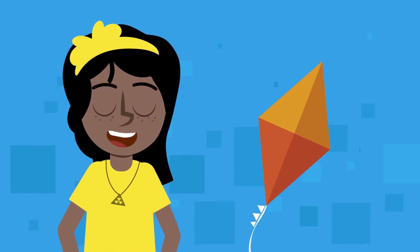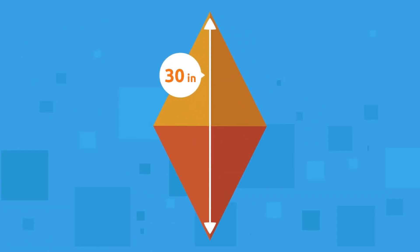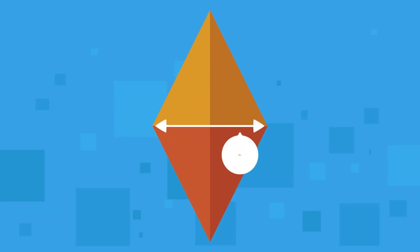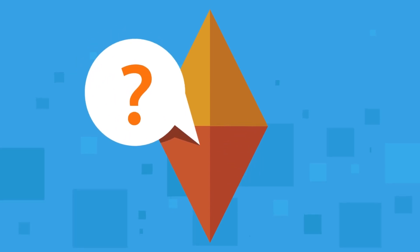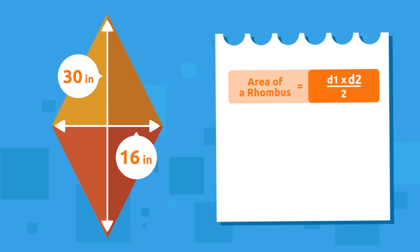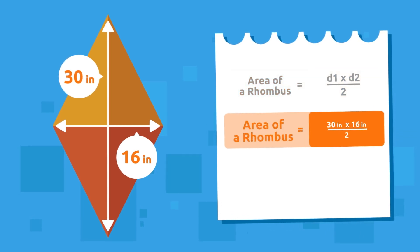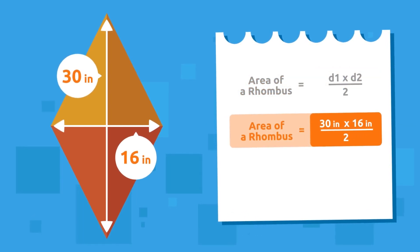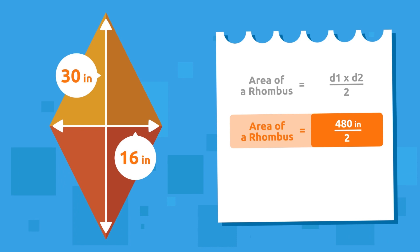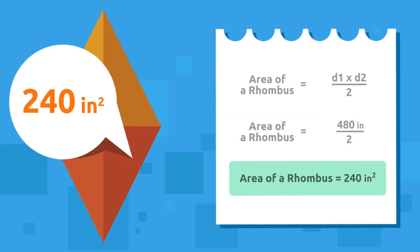Anna has a rhombus-shaped kite. If the longest diagonal measures 30 inches and the shortest diagonal measures 16 inches, what is its total area? Remember that we must multiply the longest diagonal by the shortest diagonal and then divide by two. 30 times 16 equals 480, and 480 divided by 2 equals 240.